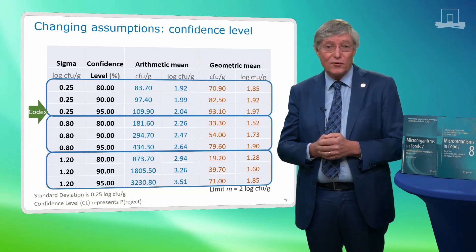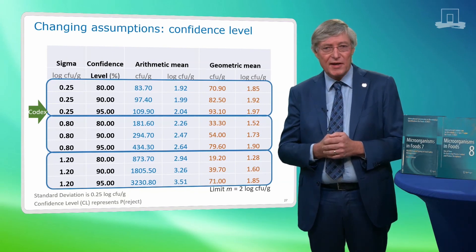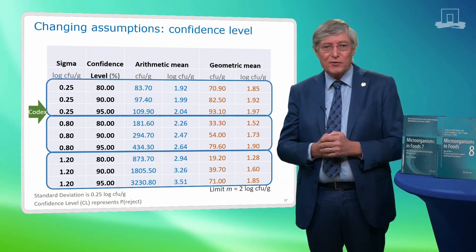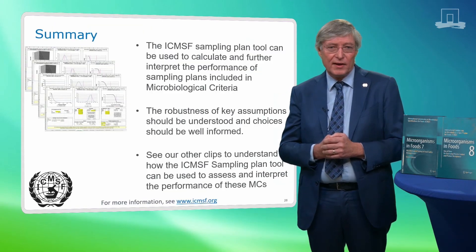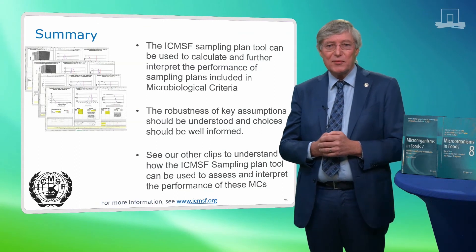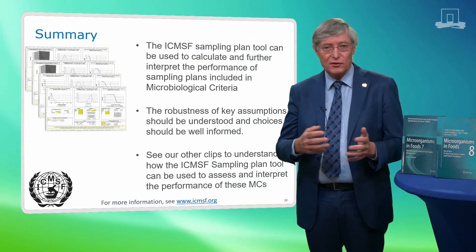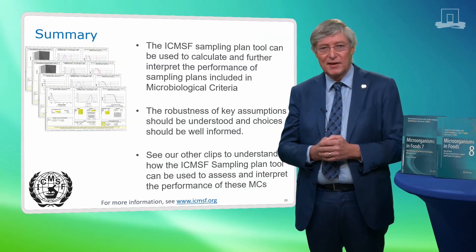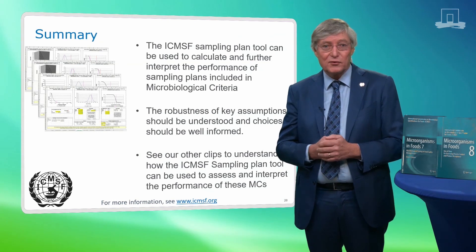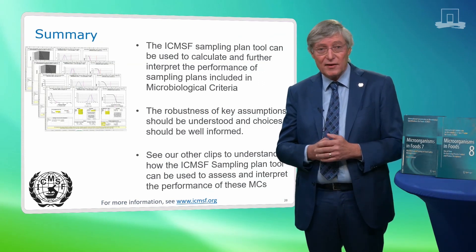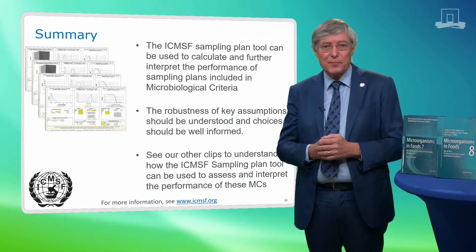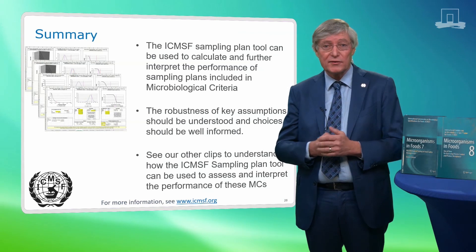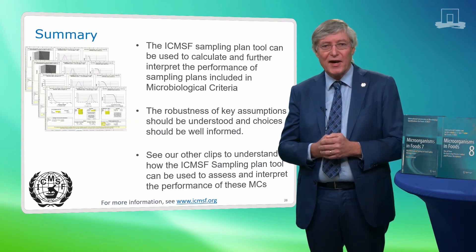We saw a similar trend when looking at an increasing sigma value for a constant confidence level. In conclusion, using the arithmetic mean for sampling plan performance and robustness may yield different results and could warrant different interpretations of potential consumer risk associated with compliant or non-compliant lots. We can conclude that the choice of standard deviation has a marked impact on sampling plan performance. Therefore, the performance of a sampling plan is best determined using a standard deviation that is well representative of the homogeneity of the type of food it applies to. Values chosen for key assumptions such as the standard deviation and the confidence level may have quite an impact on the calculated performance — their robustness should be well understood and choices should be well-informed and representative.